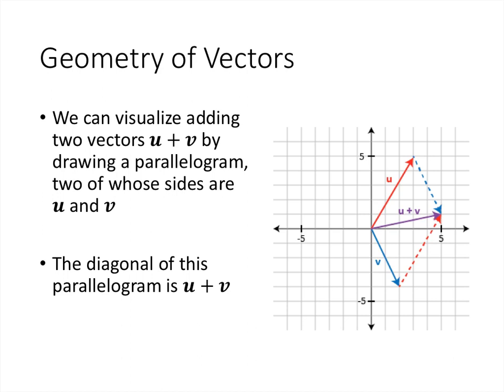Now we can think of our vector operations in a geometric way as well. When we add two vectors, geometrically what's happening is we can draw a parallelogram where two of the sides of the parallelogram are the two vectors that we started with. In this case, I've got a vector u, which is the vector (3, 5), and the vector v, which happens to be the vector (2, −4). And when I add those together, I get the vector u plus v. And when I add (3,5) to (2, −4), do that component-wise, I get (5,1), which is exactly what this vector is, u plus v.